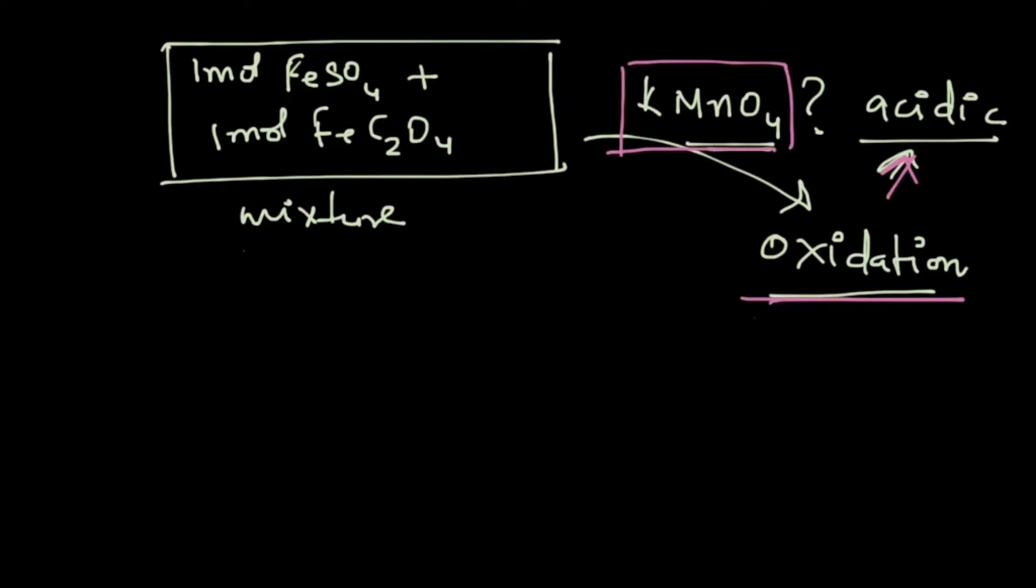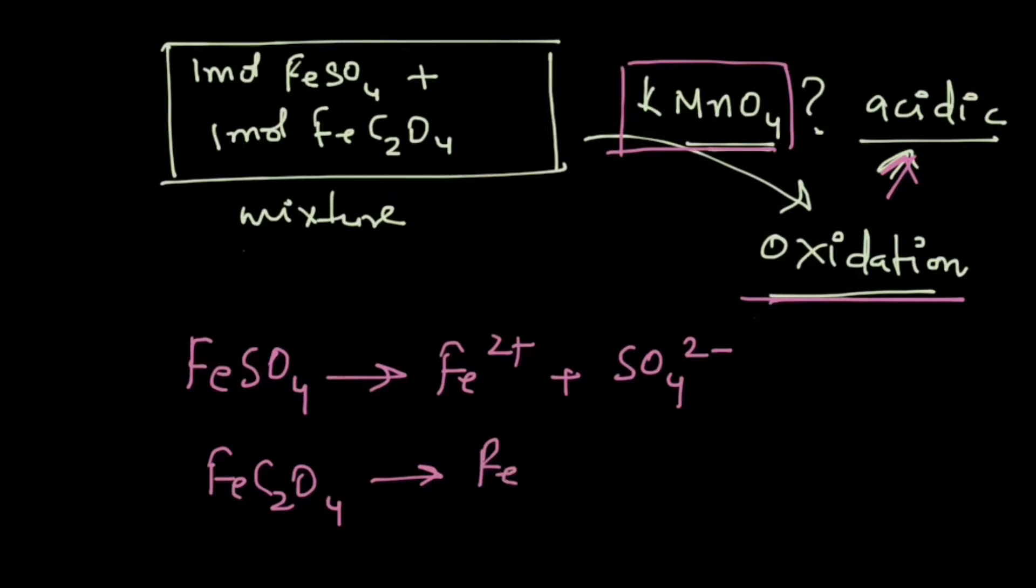Let's take a look at the species in the reaction mixture. We have FeSO4 that will give us Fe2+ and SO4 2- that is a sulphate ion, and FeC2O4 will give us Fe2+ and C2O4 2-.